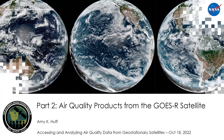Welcome everyone. This is an ongoing series on air quality data products using a new generation of geostationary satellites. We are in week two, or session two, of this series. In session one, we learned about available geostationary satellite sensors and some basics about differences between low-Earth orbiting satellites, which have been providing air quality observations for over 20 years, such as MODIS, OMI, and VIIRS.